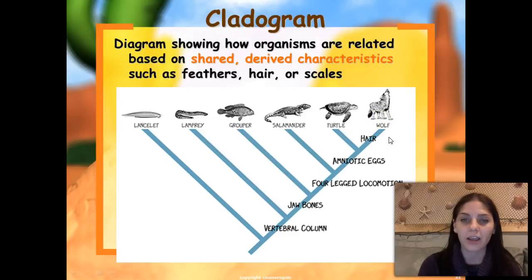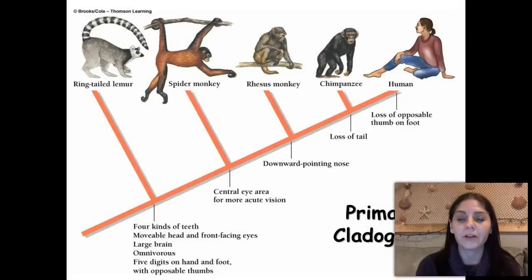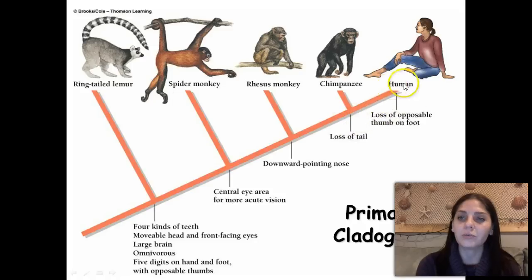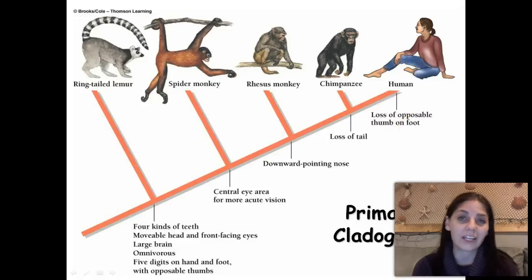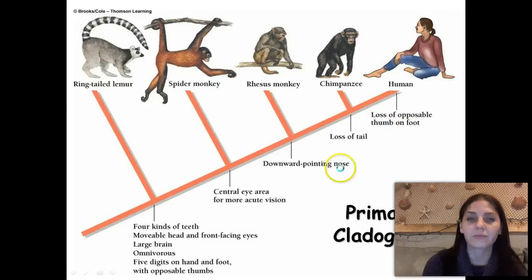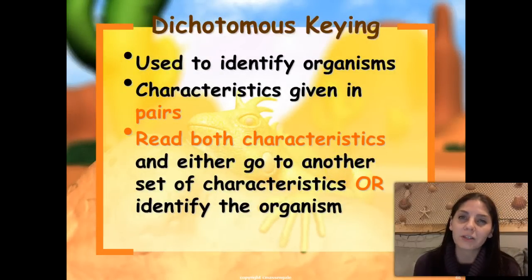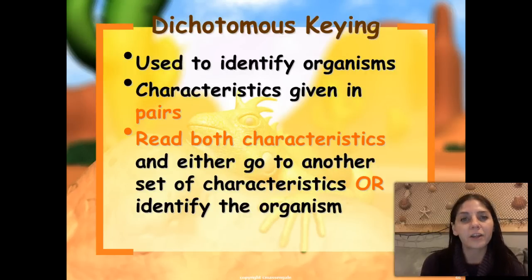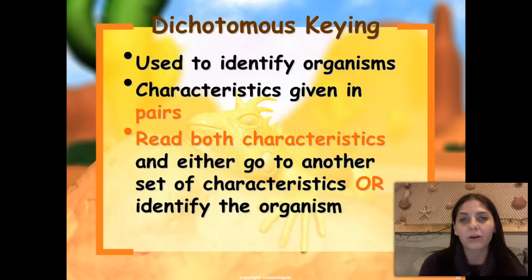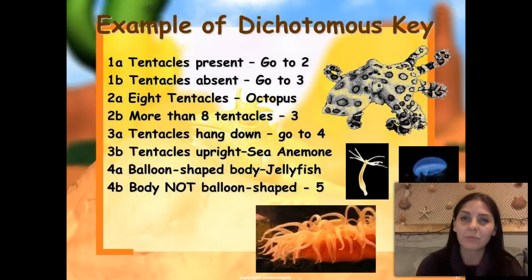Here's another example: a primate cladogram showing different characteristics primates have acquired. For example, if I said 'loss of a tail,' only the human and chimpanzee have lost their tail. If I said 'loss of an opposable thumb on the foot,' only humans have that — even though it would be really cool to have. The last topic in taxonomy is the dichotomous key. Dichotomous keys are used to identify organisms by their characteristics, and they're given in pairs.